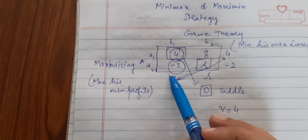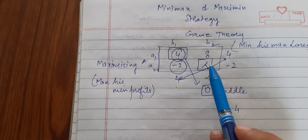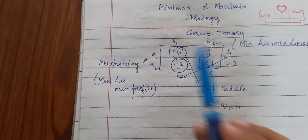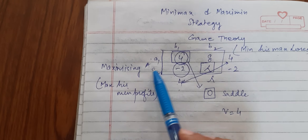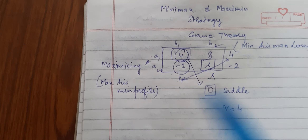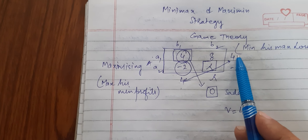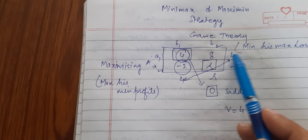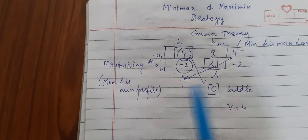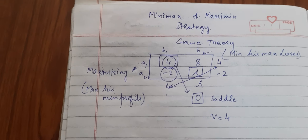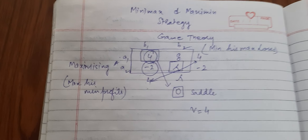He minimized his maximum losses. And since between the two options this was the smaller loss, he chose it. The gaining player maximized his minimum profits — out of the two profits, he got the larger one. The other player was going to incur a very large loss of lambda, but he chose the smaller loss instead. So this is how we deal with the Minimax and Maximin principle in game theory.